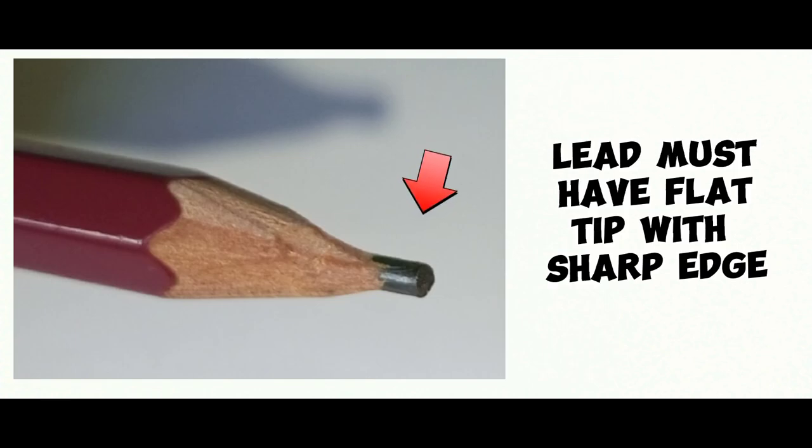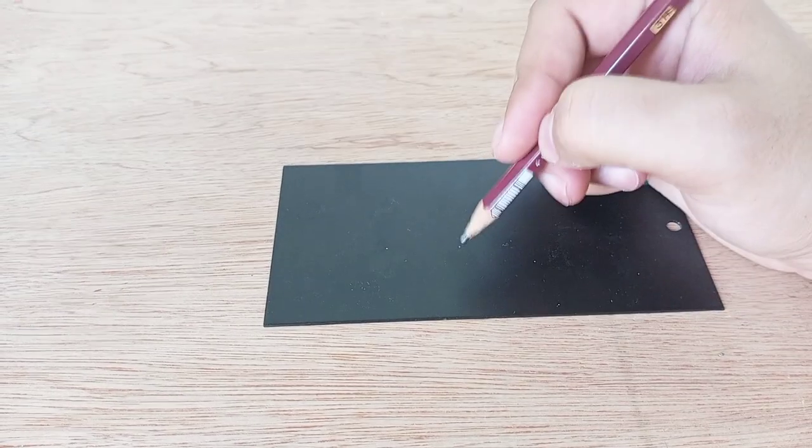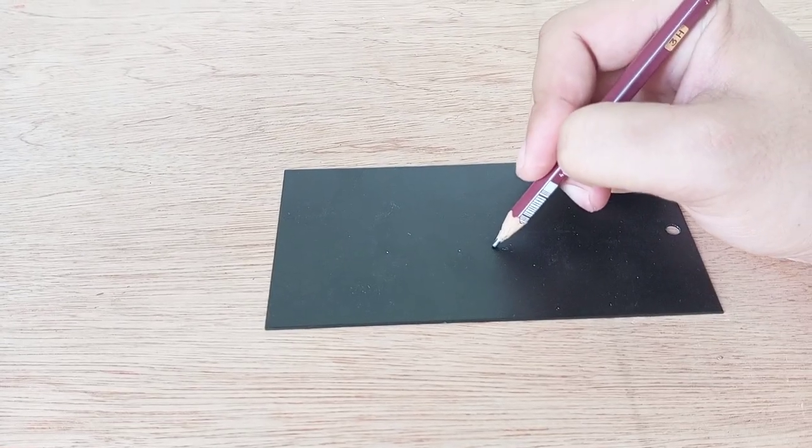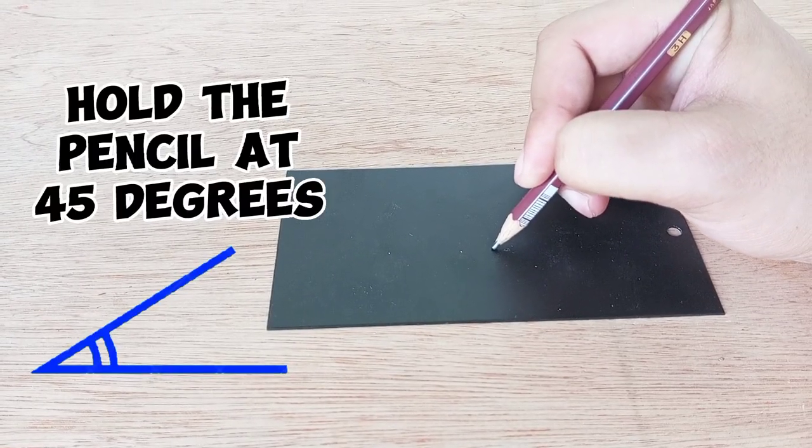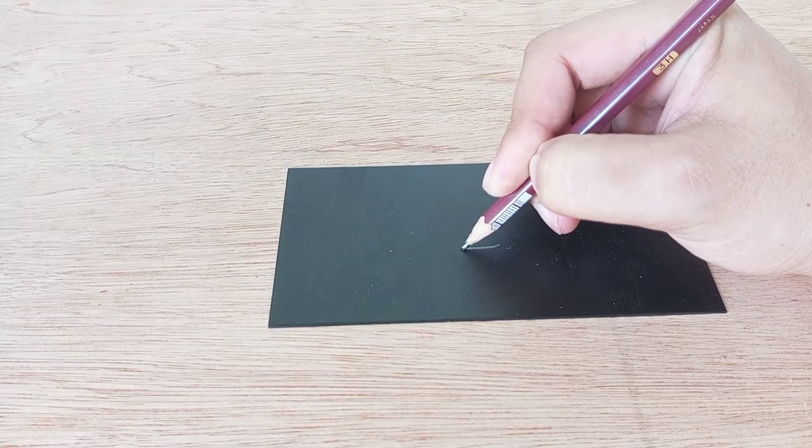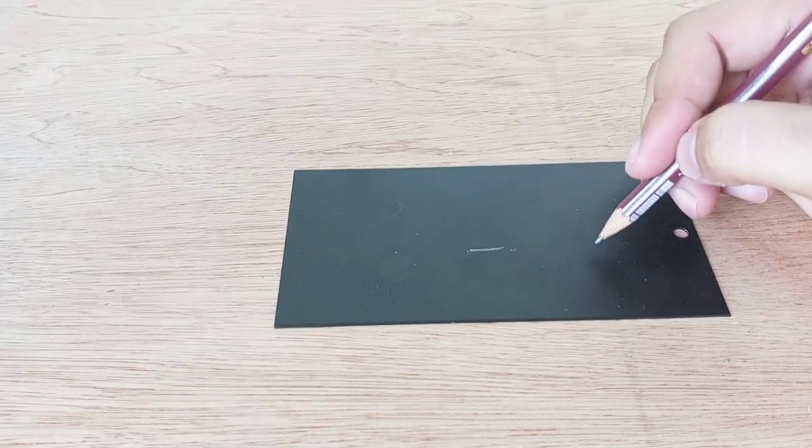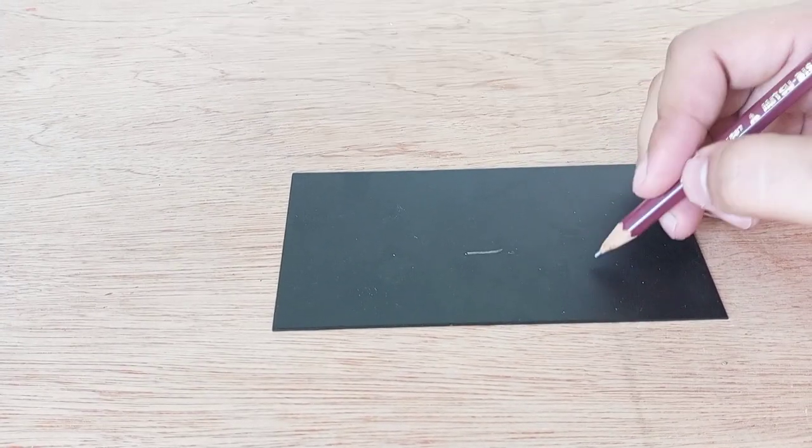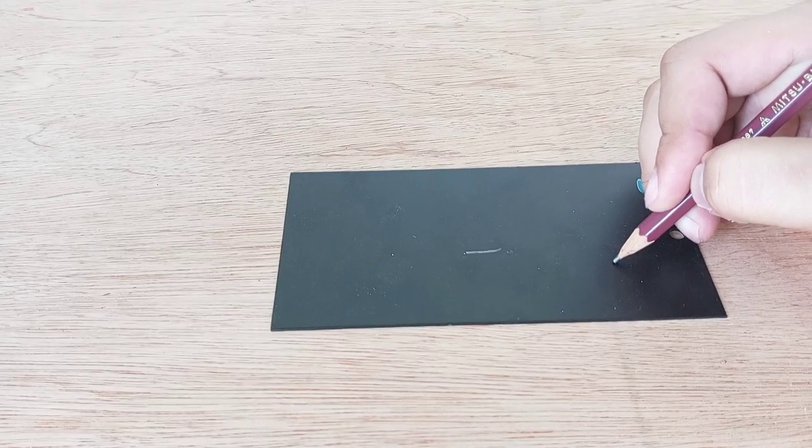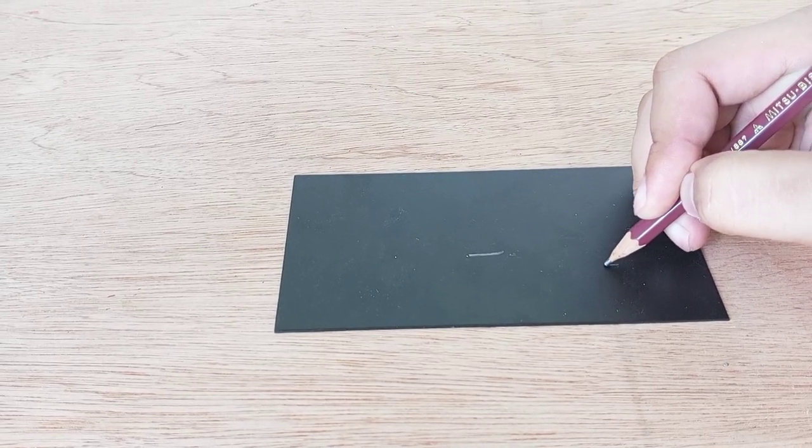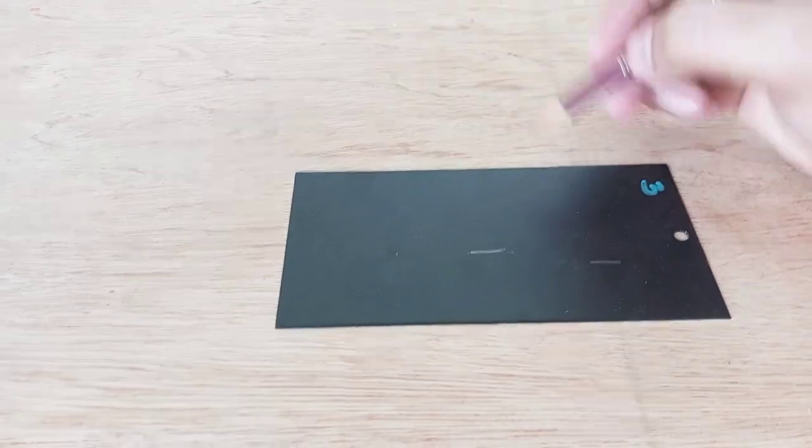Then, after that, you are now ready to do the test. Place the test panel on a flat surface. Hold the pencil at 45 degrees to the coating surface and push the pencil forward at a rate of approximately 3 mm per second with maximum force but without breaking the lead.